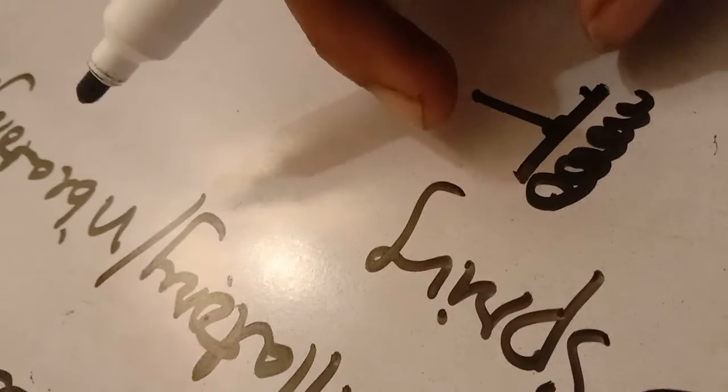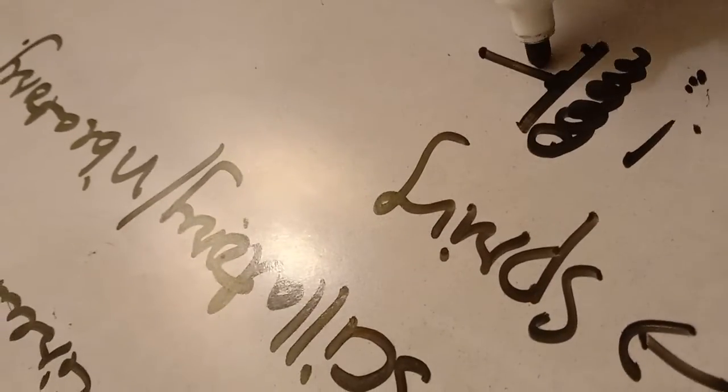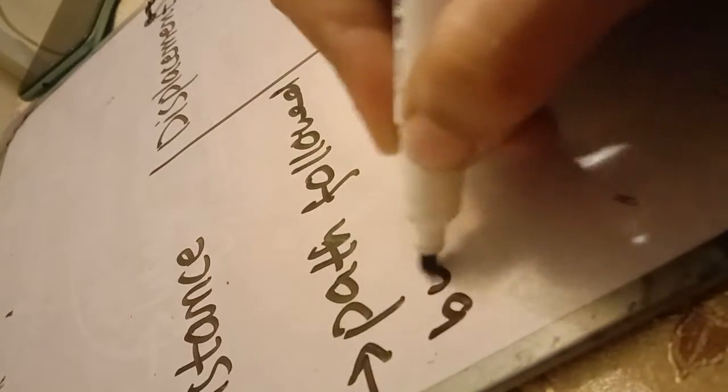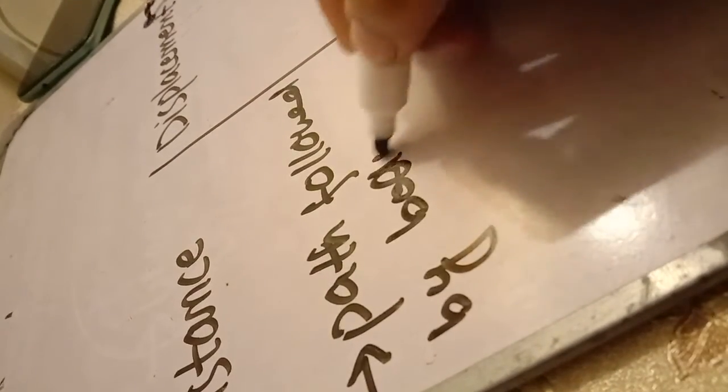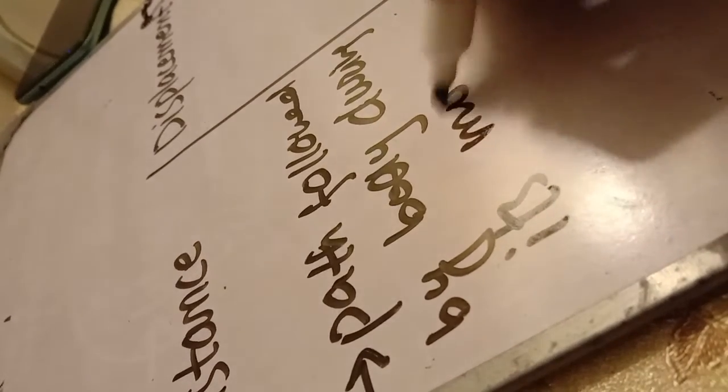The last type is oscillatory or vibratory motion. For example, we can take the example of a pendulum or a spring. If we push the spring downward and let it go back up, the motion it produces would be known as vibratory motion.